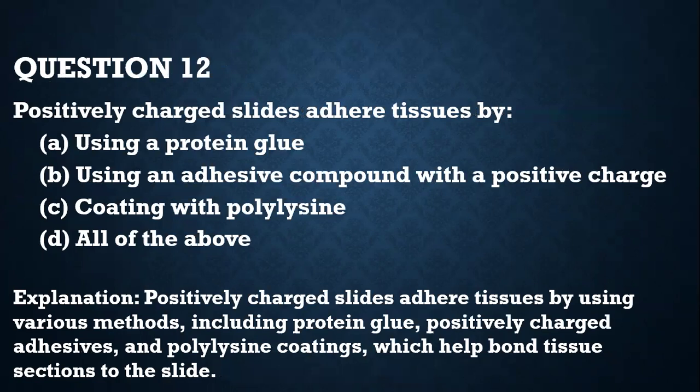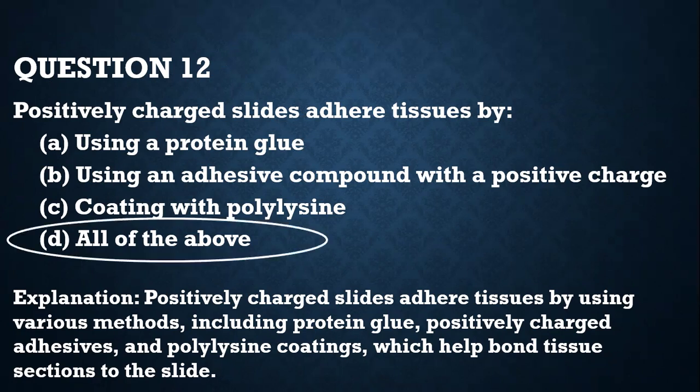Question 12. Positively charged slides adhere tissues by: A — using protein glue; B — using an adhesive compound with a positive charge; C — coating with polylysine; D — all of the above. Positively charged slides adhere tissue using various methods including protein glue, positively charged adhesives, and polylysine coatings, which help bind tissue sections to the slide.